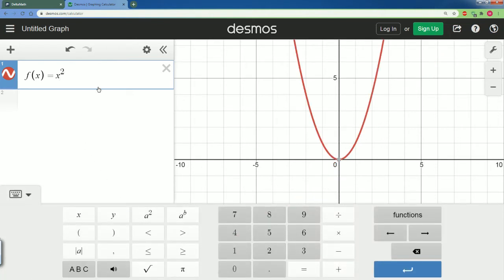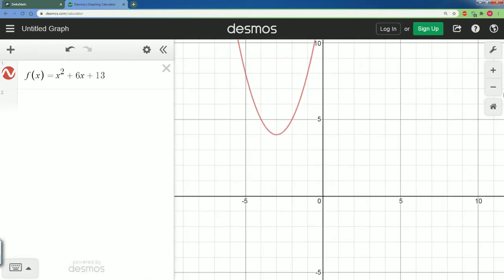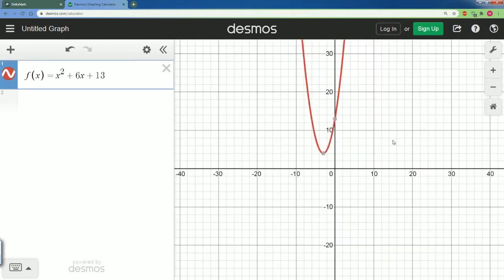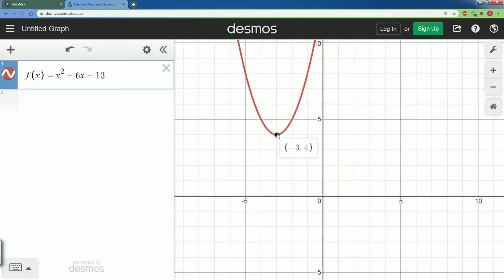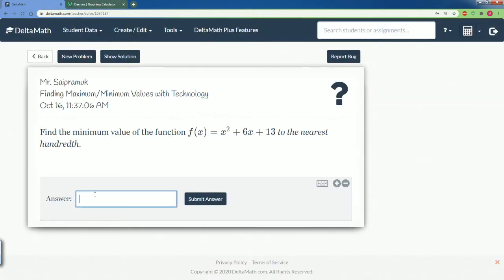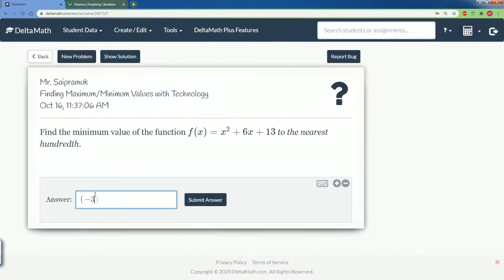Plus 6x plus 13. Then I saw if I zoom in and out, I saw that this is a minimum, right? Zoom it back in, because it's the smallest value and that is at the value of negative 3 comma 4. So I go here and I type in negative 3 comma 4.